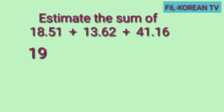Sunod, i-round off din natin itong 13 and 62 hundredths. Ang digit sa one's place ay 3. Ang nasa kanan niya ay 6 — dahil 6 ito, mataas sa 5, round up pa rin. Dadagdagan natin ng 1 ang 3. Kaya magiging 14. Then, i-round off din natin itong 41 and 16 hundredths. Ang number sa one's place ay 1. Ang nasa kanan niya ay 1 din. Dahil mababa itong 1 sa 5, ang gagawin natin ay round down — hindi natin babaguhin ang number sa one's place. Yung 1, 1 pa rin. Kaya yung whole number ay 41.